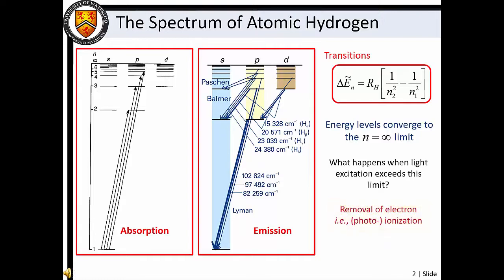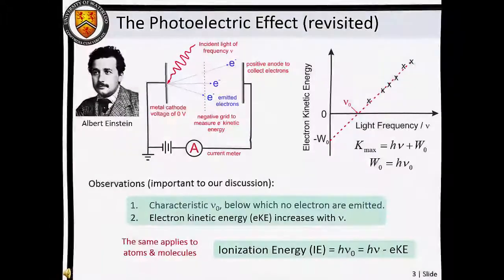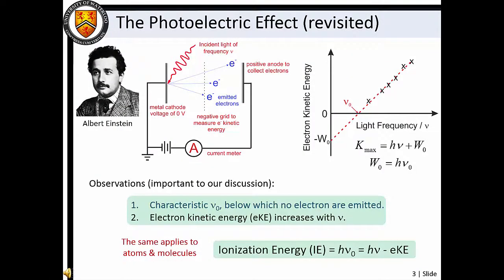If we surpass this limit via excitation with light, the resulting photoionization process causes ejection of an electron from our atom or molecule. Photoionization is essentially the atomic and molecular analog to the photoelectric effect. We find that when the ionization energy of our atom or molecule is exceeded by photoexcitation, the resulting photoelectron kinetic energy is linearly dependent on the light's frequency. The principal difference between photoionization of atoms and molecules and the photoelectric effect is that, unlike bulk materials, atoms and molecules have discrete quantized energy level structure. This has important bearing on the observed photoelectron kinetic energy distributions.